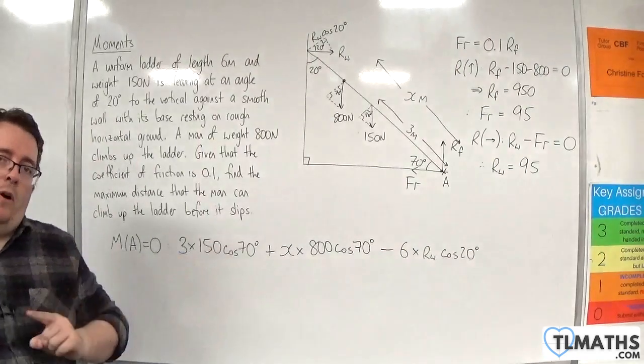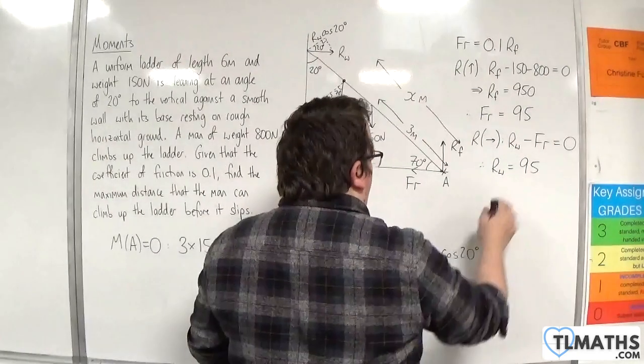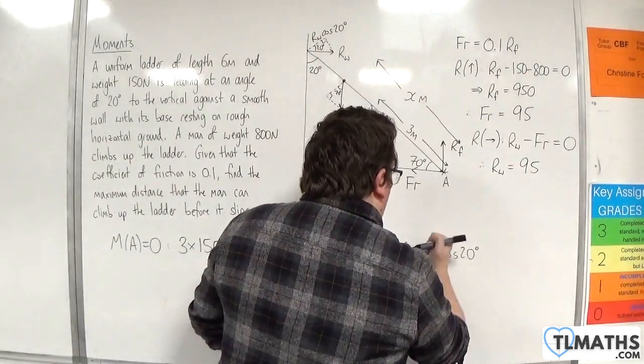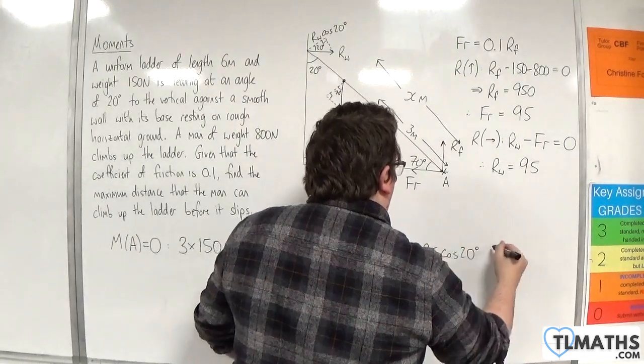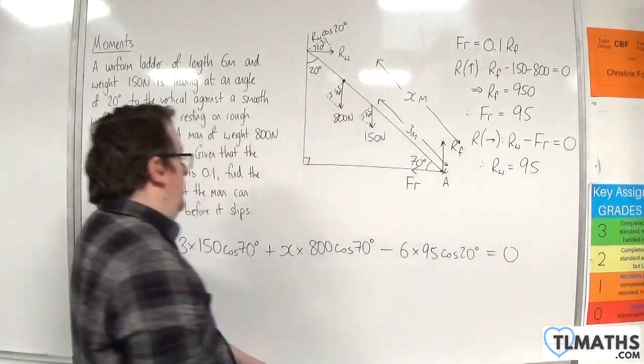Now, remember, we've worked out what Rw is. It's 95, so I can replace that with 95, and that's got to be equal to 0.